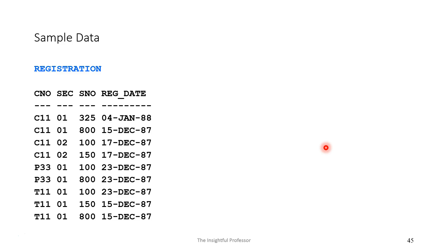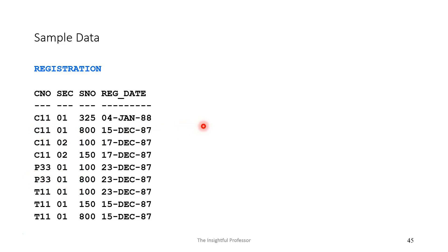The registration table: remember, this was an intersection between class and student. We can see class data here — the combination of course number and section number — and student data. What's interesting is that something like C1101 appears multiple times, but each time with a different student number. Likewise, student number 800 may appear multiple times, but each time with a different combination of course number and section number. That's a necessity because the three columns taken together must form a unique combination of values, serving as the primary key.